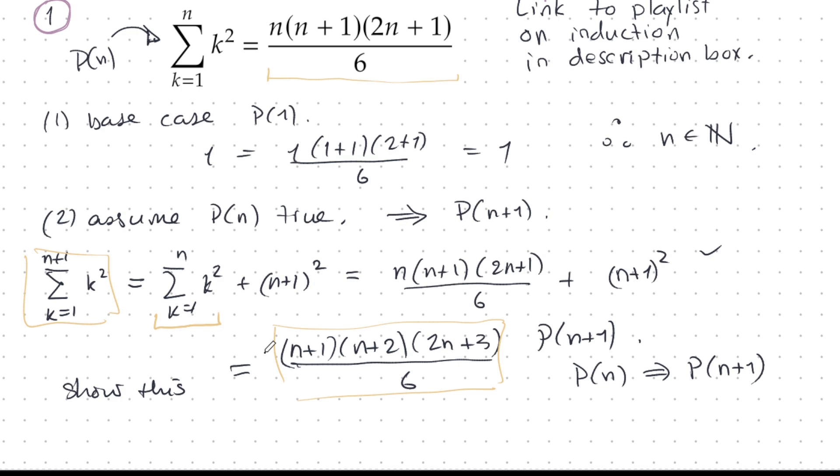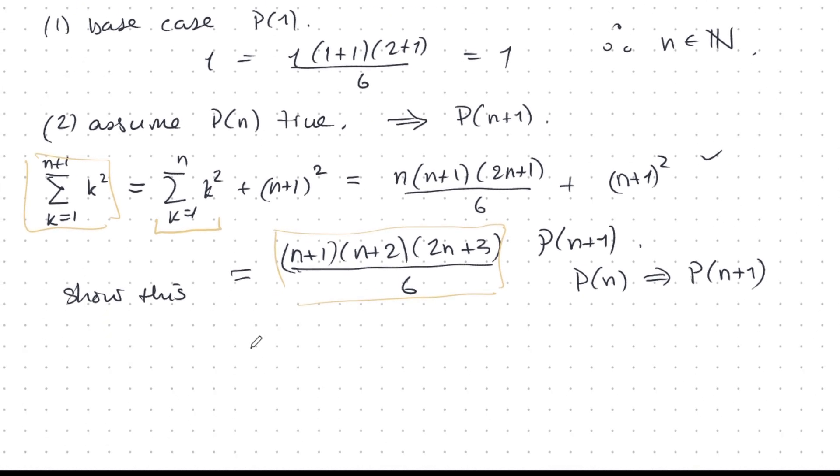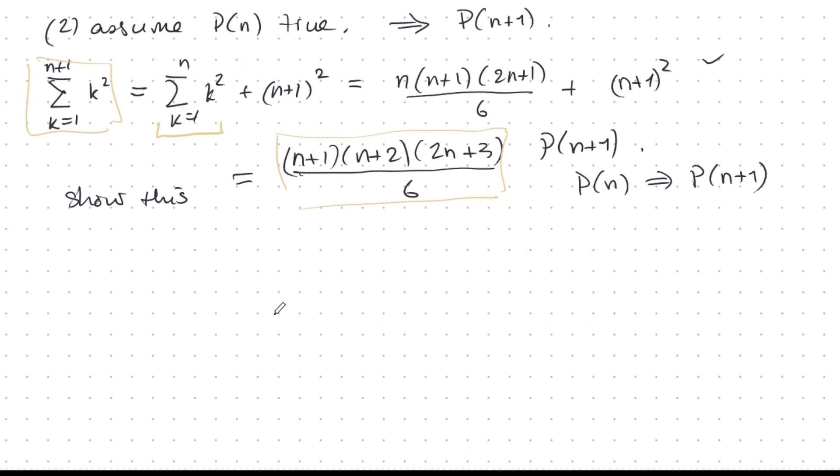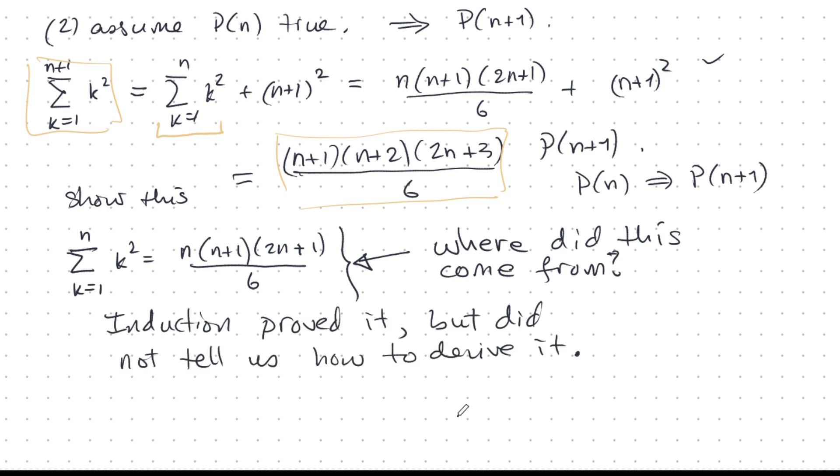However, there's something that kind of makes us wonder, where did we get this idea in the first place? So let me write this down to emphasize this. Where did this come from? Induction proved it, but it did not tell us how to derive this. So it sort of dropped on our lap and we didn't know if it was true or false. But with induction, we can establish that it's true. But where did this come from? How do you think of such a thing in the first place?